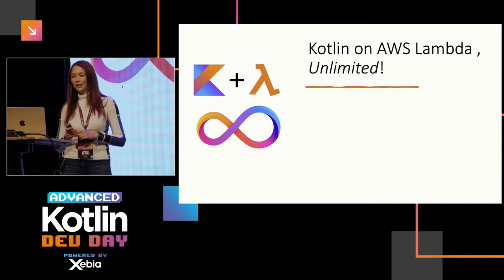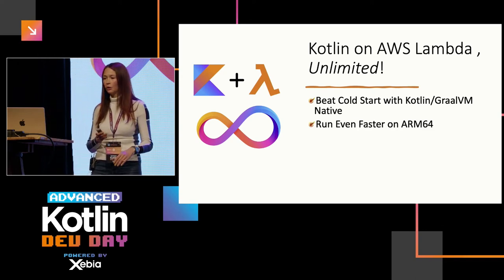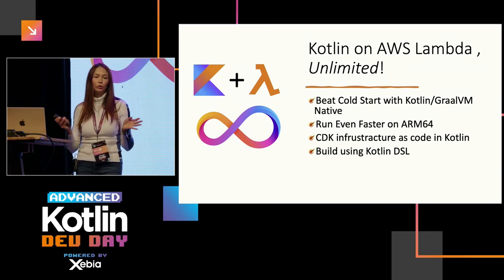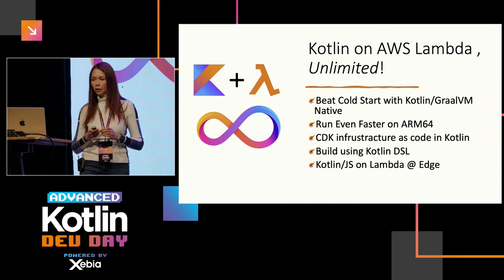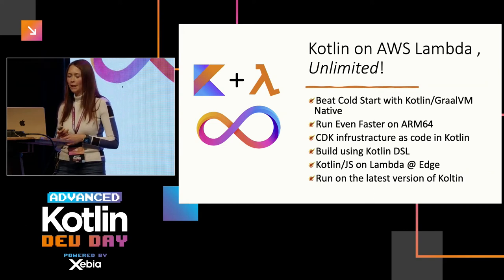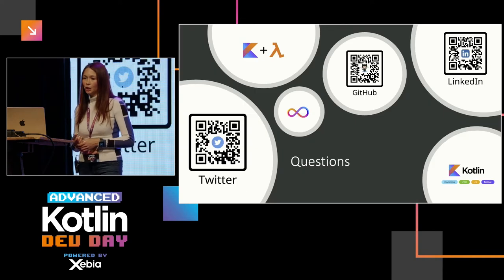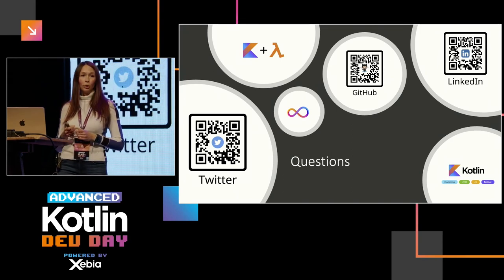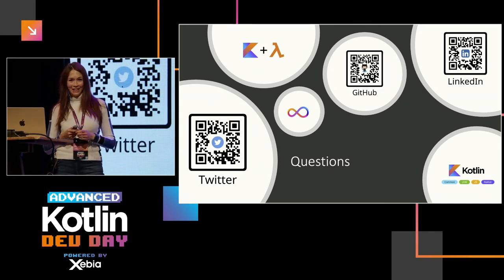Kotlin on AWS Lambda — unlimited. Beat the cold start by going native, run faster on arm64, CDK infrastructure as code in Kotlin, build with Gradle Kotlin DSL, deploy on Lambda@Edge in Kotlin, and run the latest version — which is a winner over the Java variant, where you're tied to whatever AWS releases on their runtime. You can find me on LinkedIn or Twitter, and the examples are on GitHub.